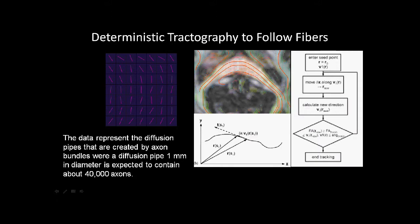This illustrates how we are using deterministic fiber tracking in these methods, so that we identify a start point — a seed point — in the set of tensors for the fiber direction. We then move that pointer along, connecting those pointers to create a fiber link. Note we are not tracing axons, we're tracing fiber pipes. A one millimeter fiber pipe is approximately estimated to be 40,000 neurons.